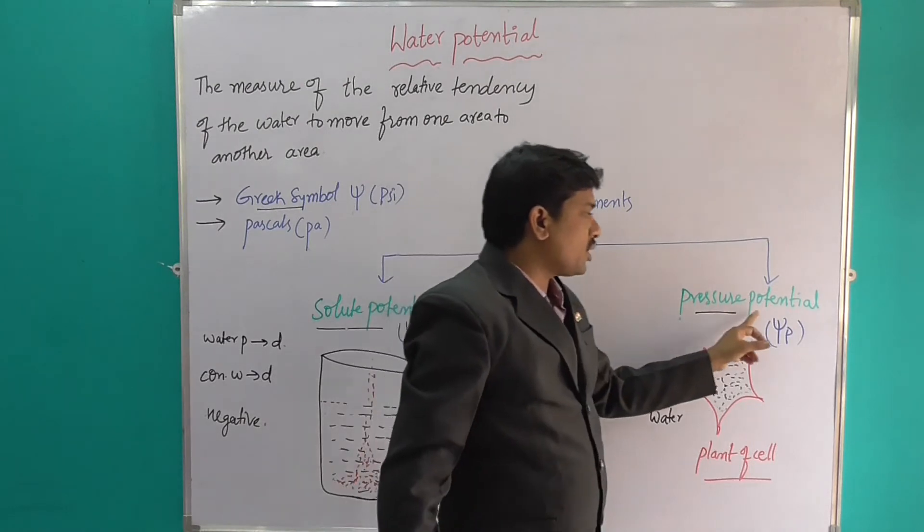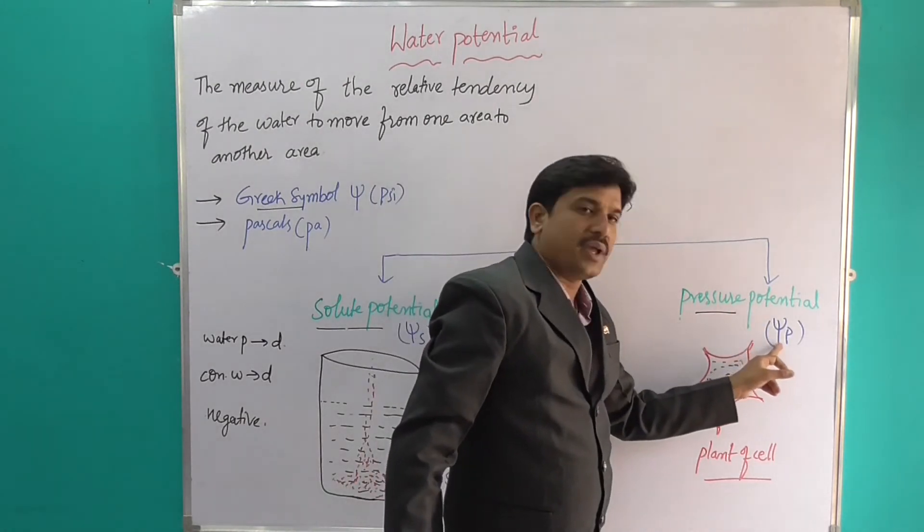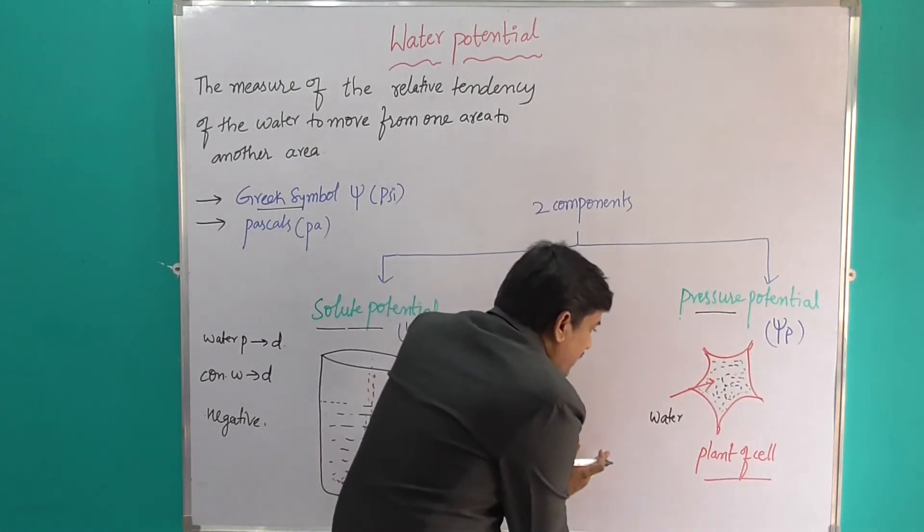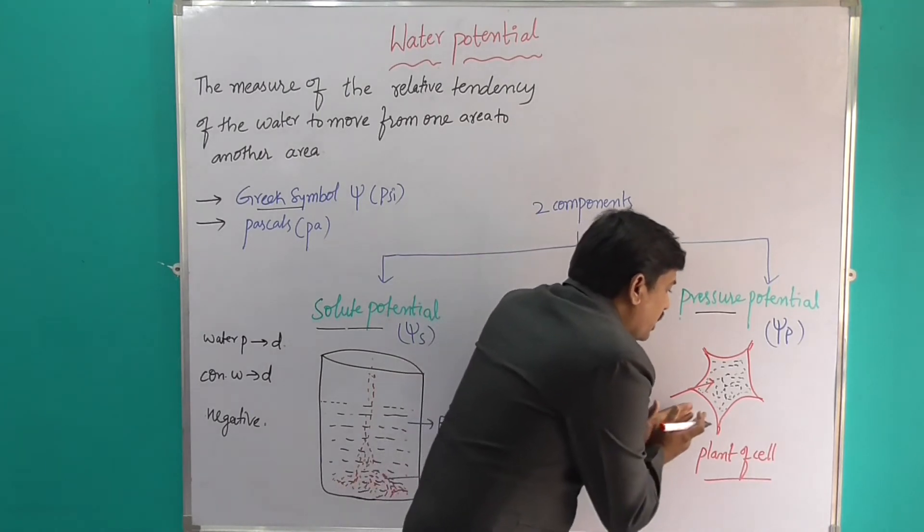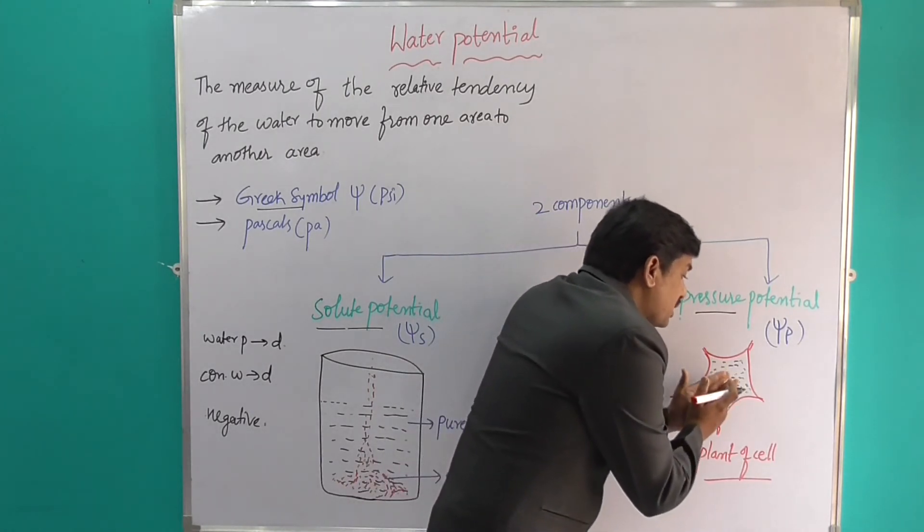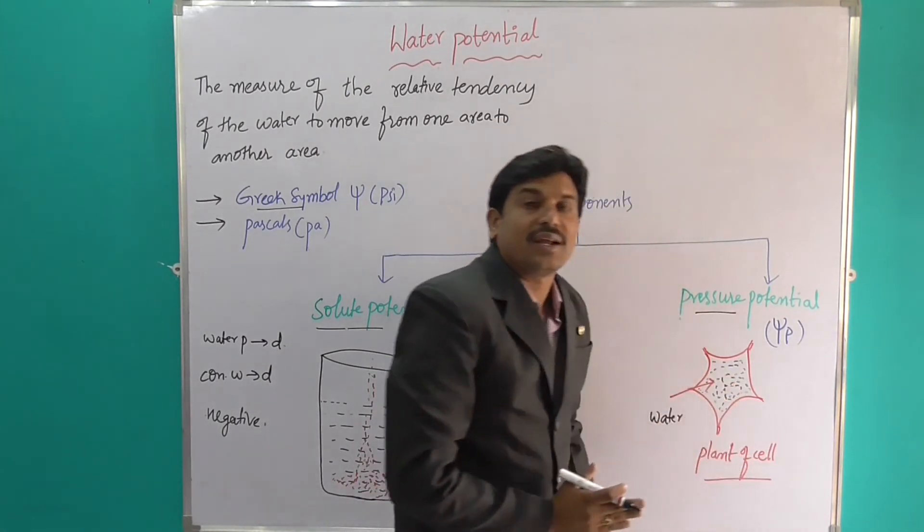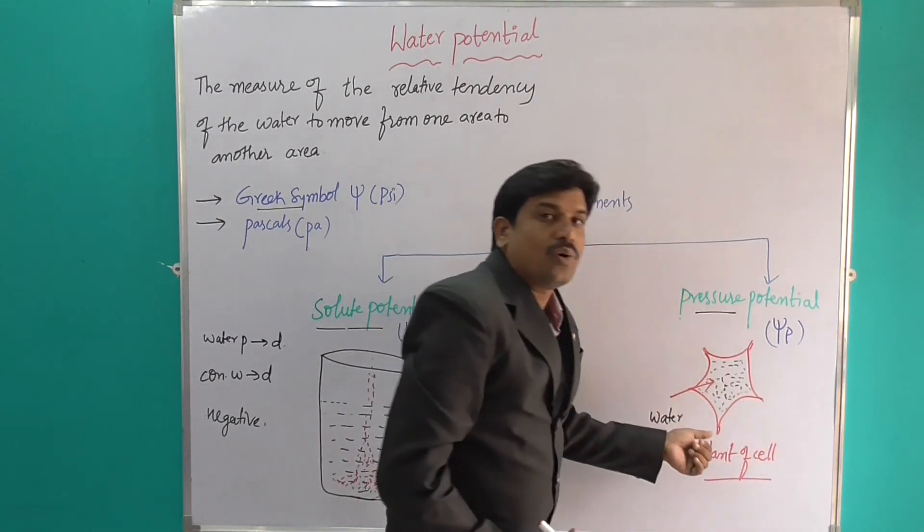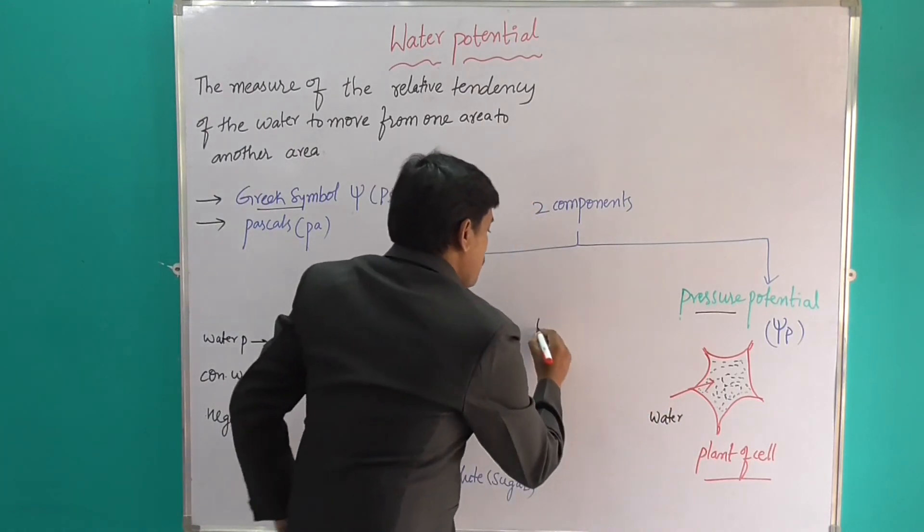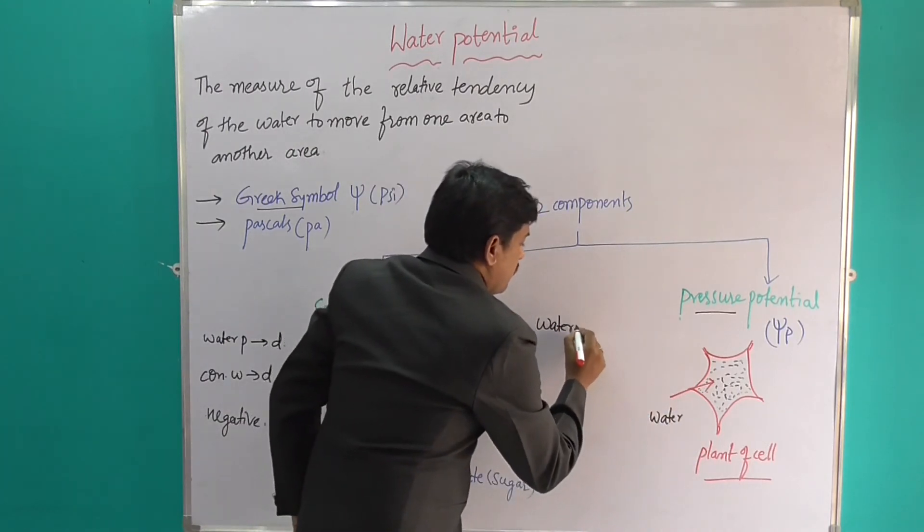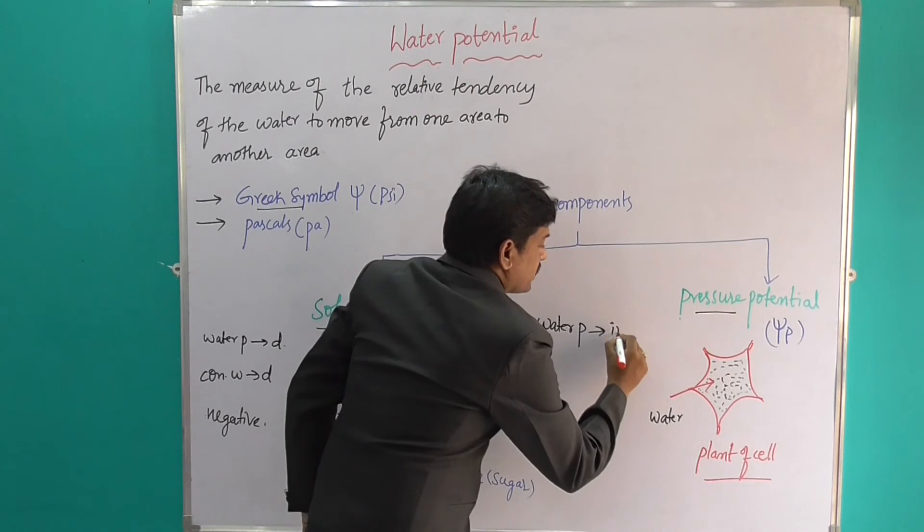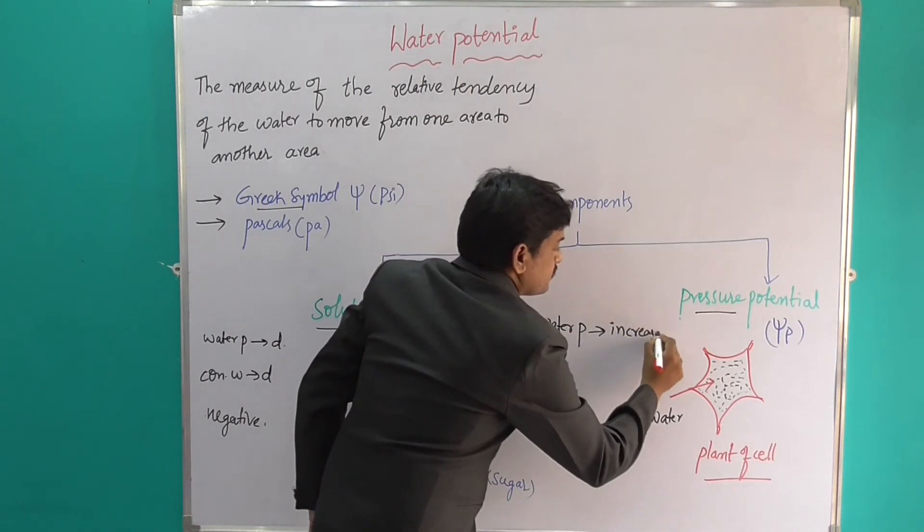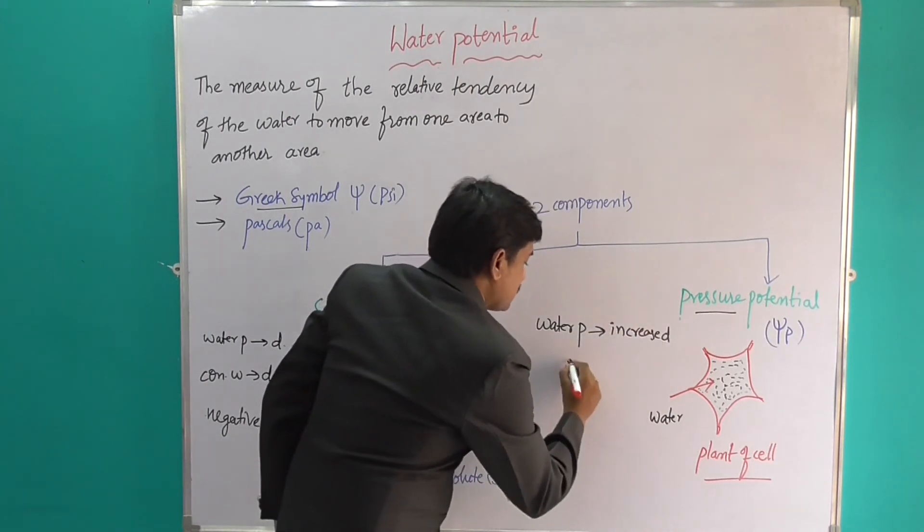The next is pressure potential. This symbol is psi p (ψp). When the water enters into the plant cell, the plant is getting turgid. Why? Because the pressure builds up against the cell wall, so the water potential is increased. It is always positive.